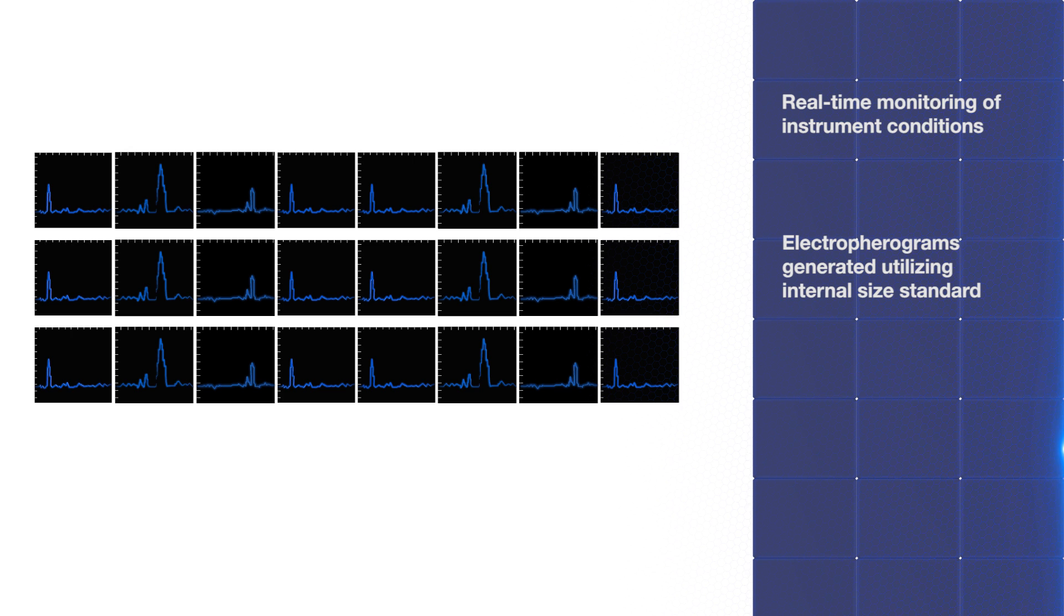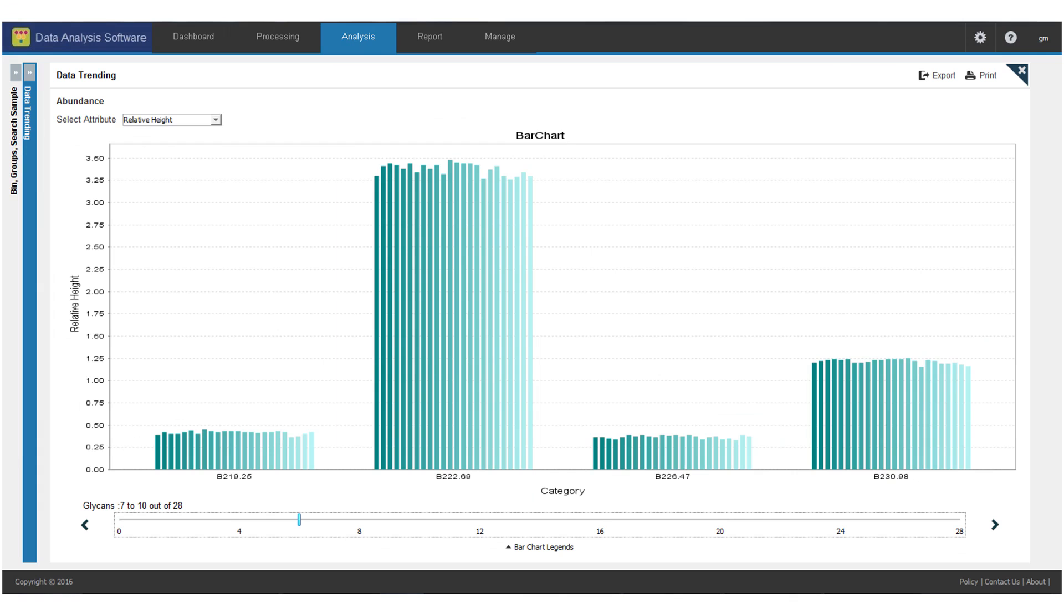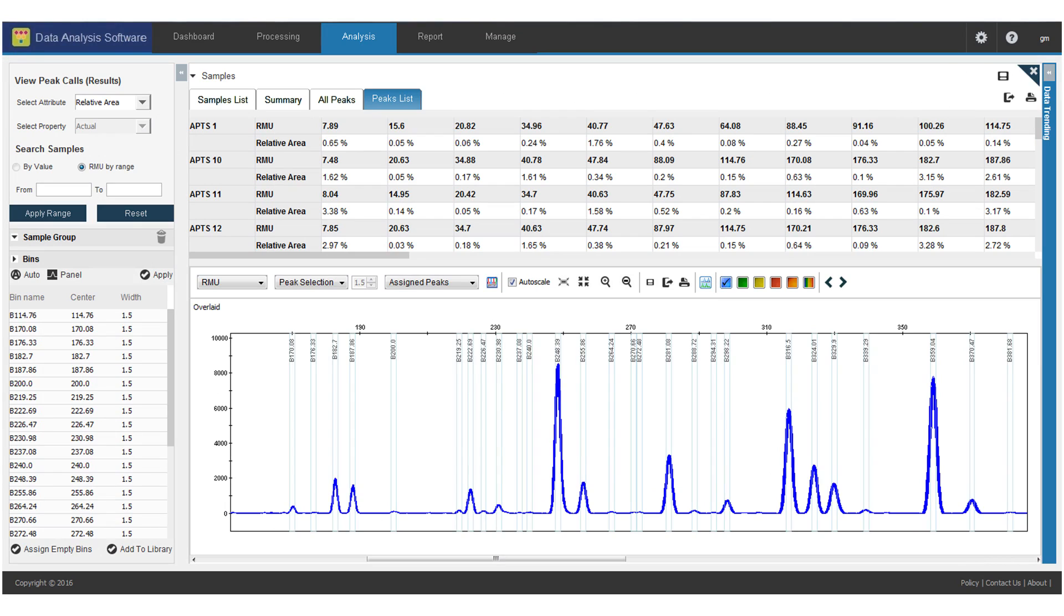Different datasets, such as those generated by glycans labeled with APTS, turquoise, or teal, can be selected and further analyzed with trends and reports.